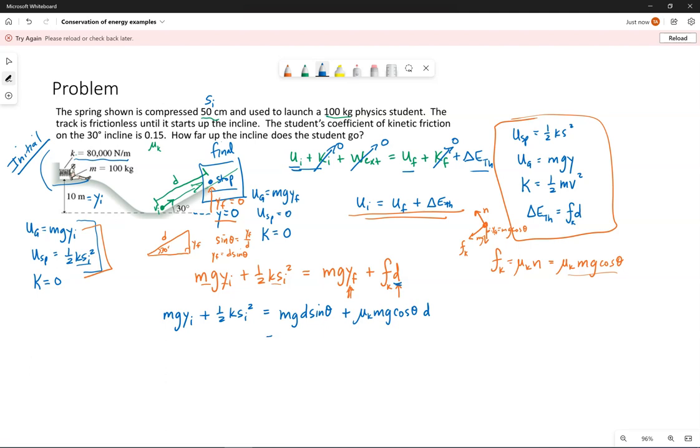We do need to factor out d on this side though, because that's what we are solving for. So d, I'm going to have everything on the left side divided by this stuff in parentheses, which I'm going to factor out.